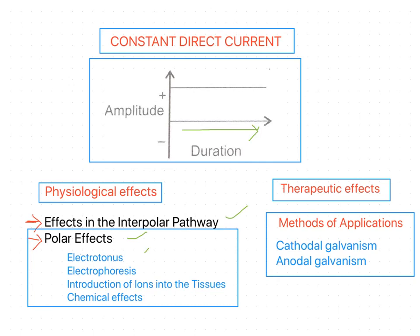The methods of application consist of two types: cathodal galvanism and anodal galvanism. There are also therapeutic effects for this constant direct current. First we are going to discuss the physiological effects — the effects in the interpolar pathway — that means for example in a tissue supplied by cathode and anode, the effects taking place in the pathway between the two poles.